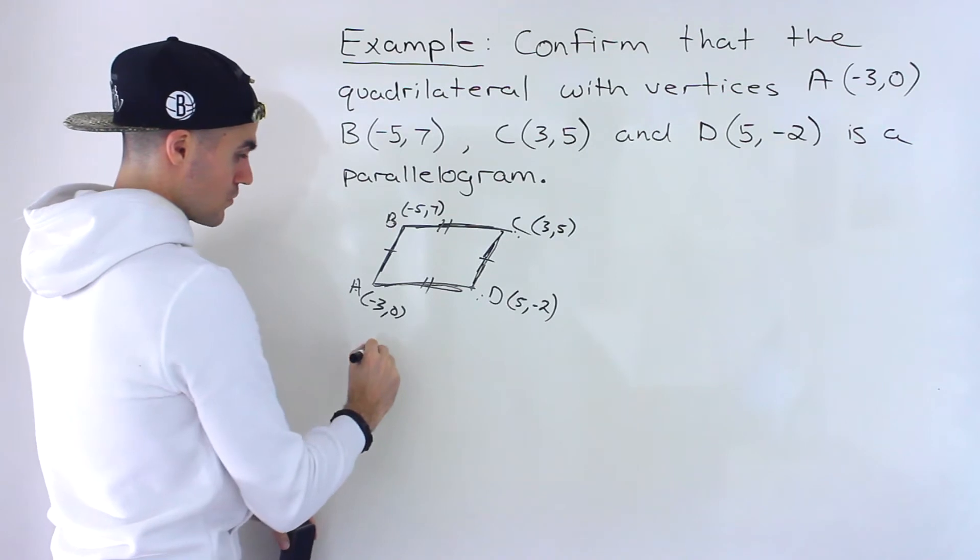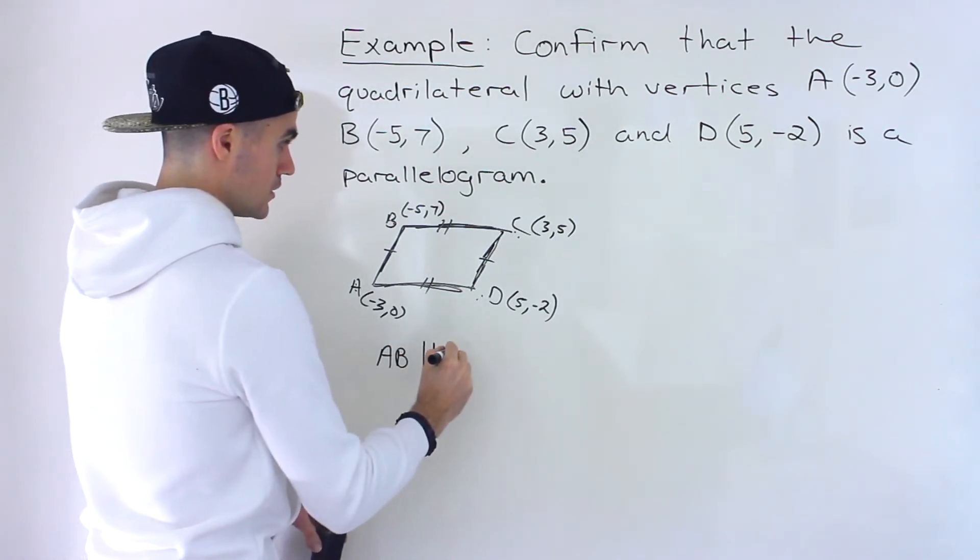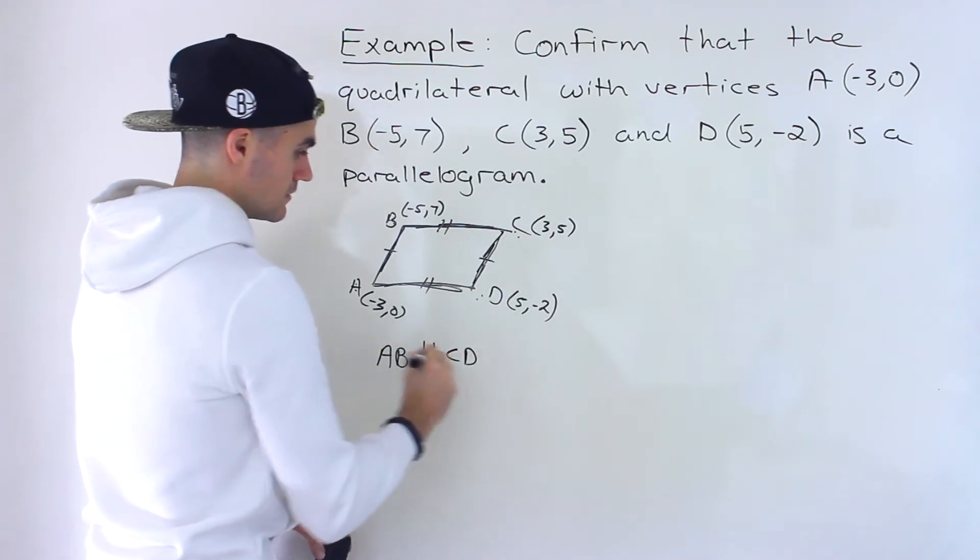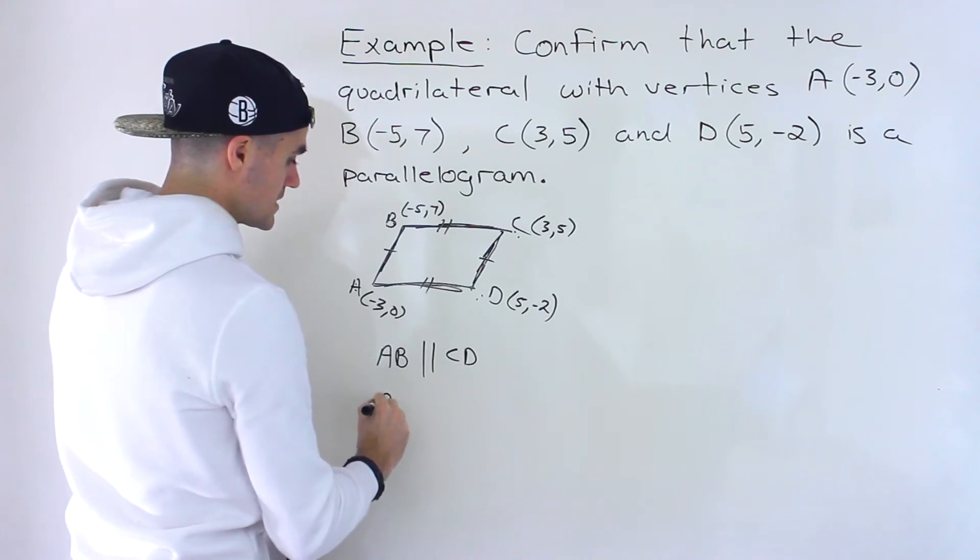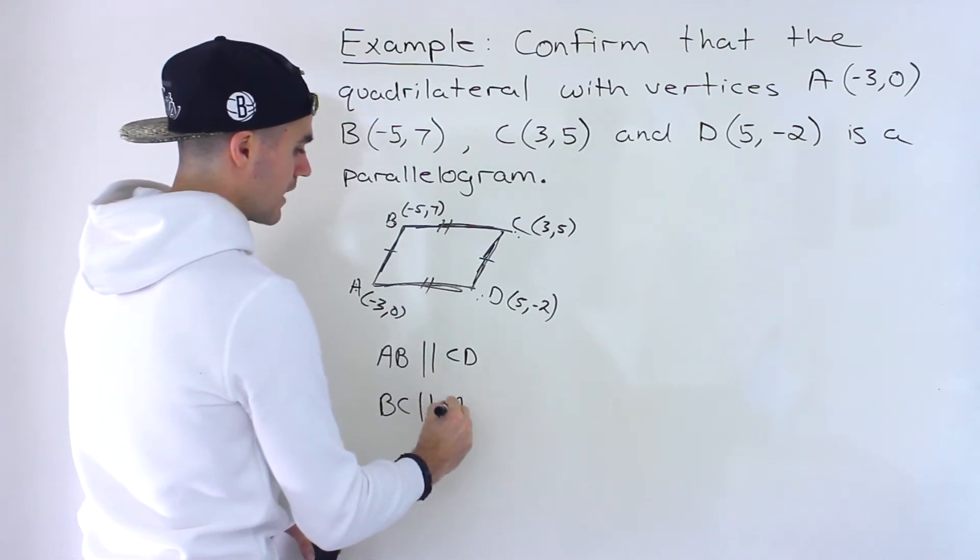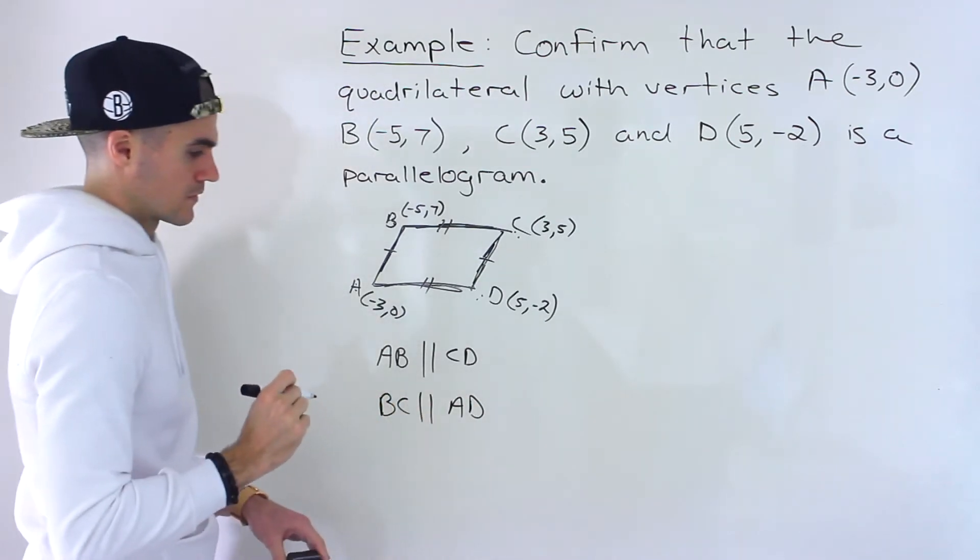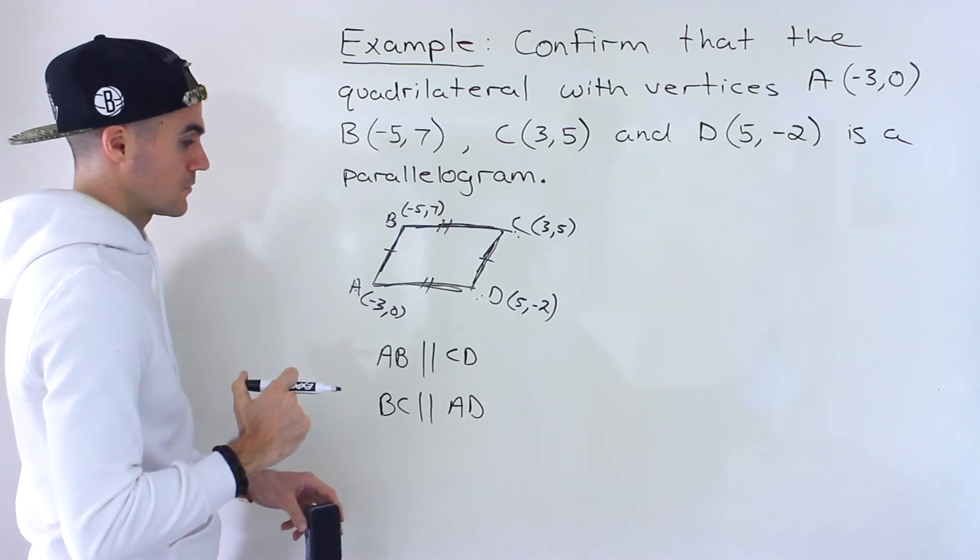And then once you have a diagram like this, what do we have to show? We have to show that side AB is parallel to side CD. And then we have to show that side BC is parallel to side AD. And if we could show those two things, then we confirm it's a parallelogram. That's how we confirm it.